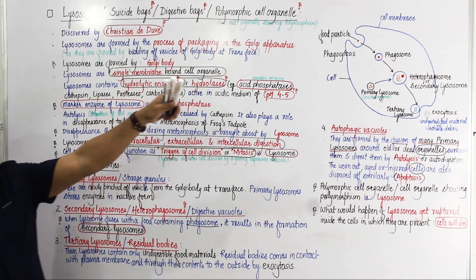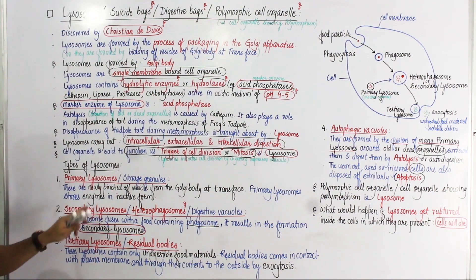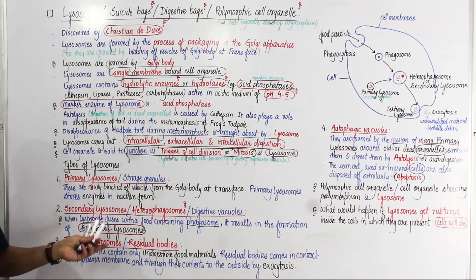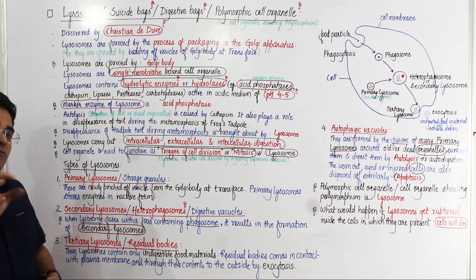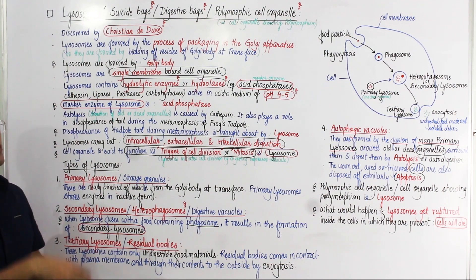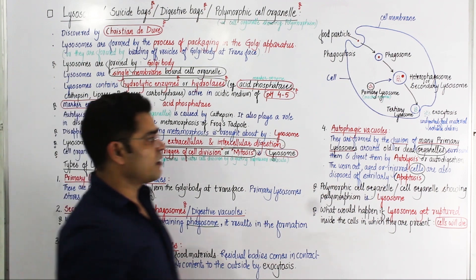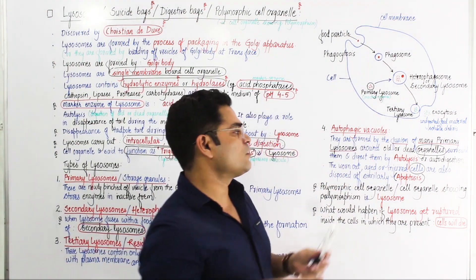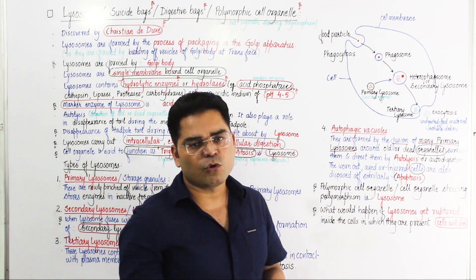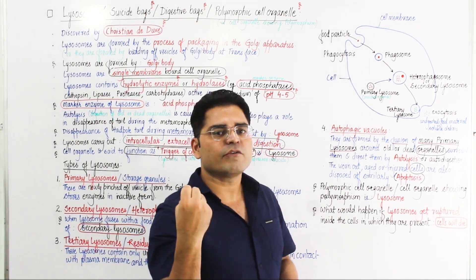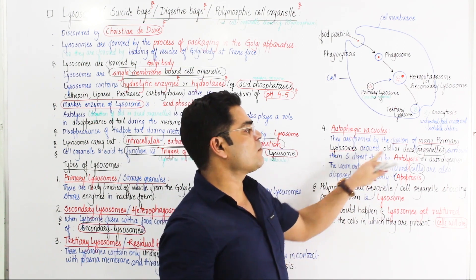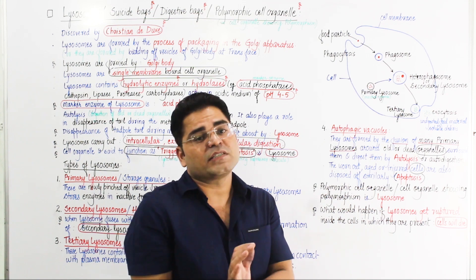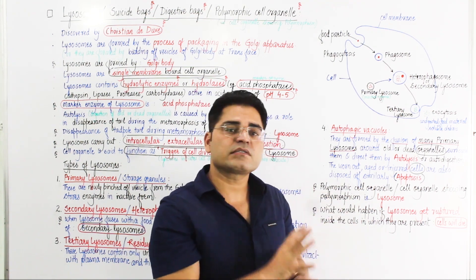To summarize: when food is taken in, the primary lysosome fuses with the phagosome to form a secondary lysosome. After digestion, undigested material forms the tertiary lysosome. If a different type of lysosome — an autophagic vacuole — is involved, dead or damaged organelles within the cell are destroyed by autolysis.